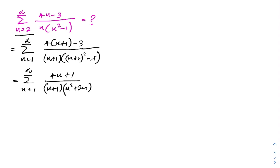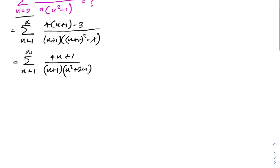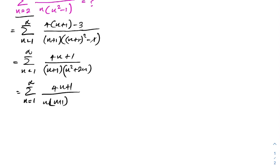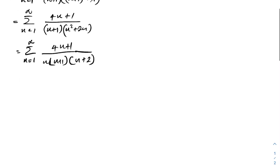In the denominator we have a factored form. So we have the sum from n equals 1 to infinity of 4n plus 1 over n times (n plus 1) times (n plus 2).